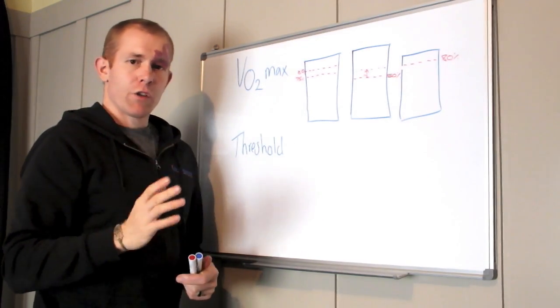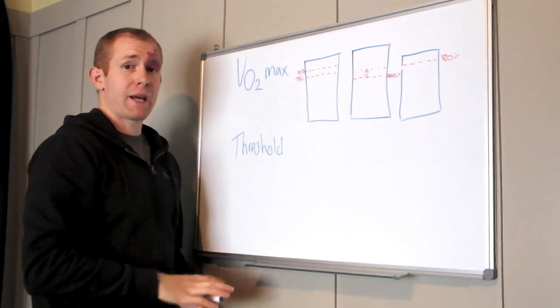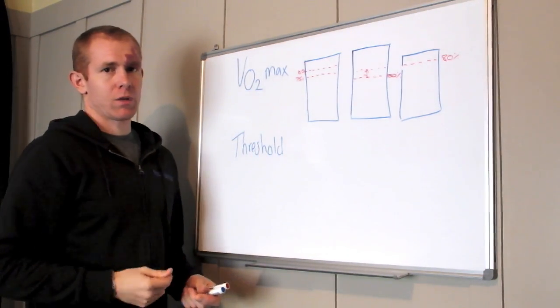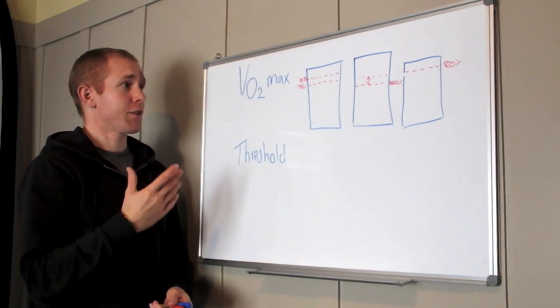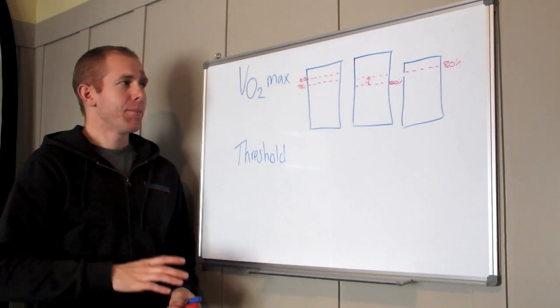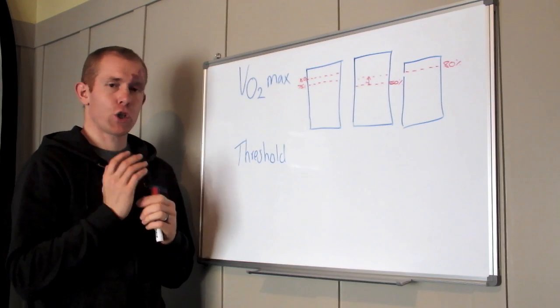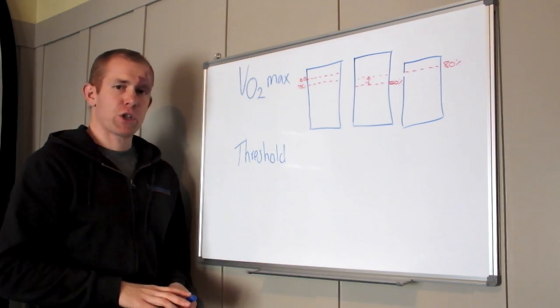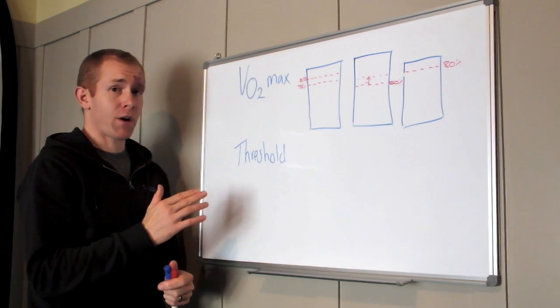So VO2 max is not the be all and end all. A lot of really good endurance athletes have a high VO2 max, but they also have an extremely high threshold. So anaerobic threshold is definitely more trainable compared to VO2 max. There are some small changes you can get in your VO2 max, but these are more just little tweaks or tuning if you like, not huge gains to be made as it's primarily genetically based.